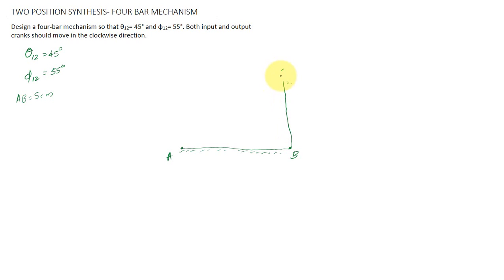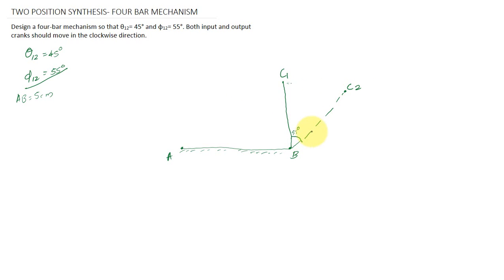I am naming this point as C1 — that means the initial position of the output link. Next, from BC1, I have to measure 55 degrees in a clockwise direction and then mark the second position of the output link. So in the clockwise direction, I have marked 55 degrees. Drawing BC2 at 5 centimeters gives the second position of the output link, and this is your point C2. BC1 equals BC2 because BC2 is the second position of the output link BC1.